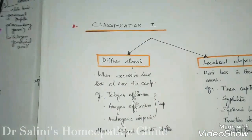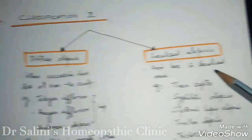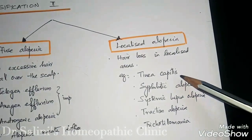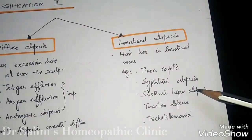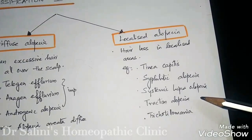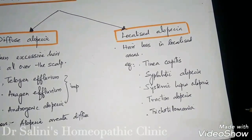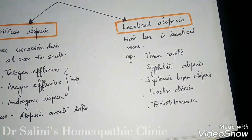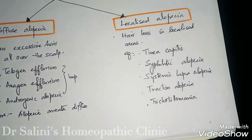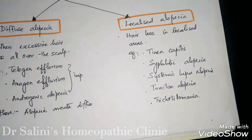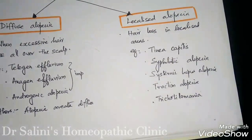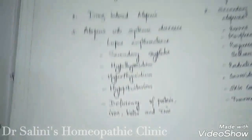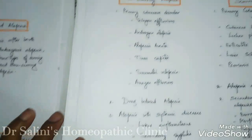Localized alopecia is hair loss in a localized area, such as tinea capitis (ringworm), syphilitic alopecia, systemic lupus alopecia, tractional alopecia where hair is pulled out, and trichotillomania — where we see kids or people with nervous disposition who have the habit of pulling or plucking their hair.